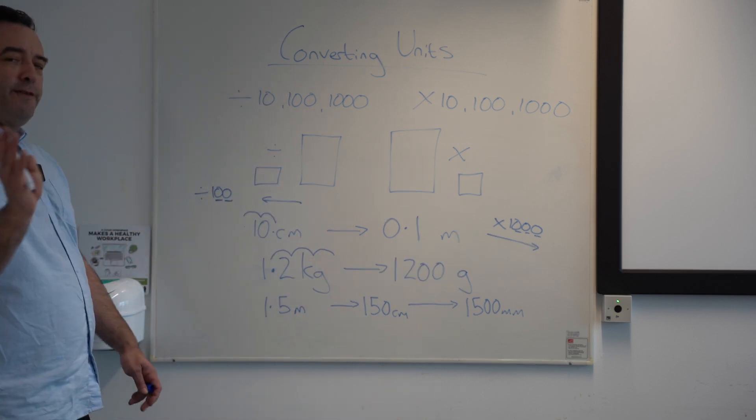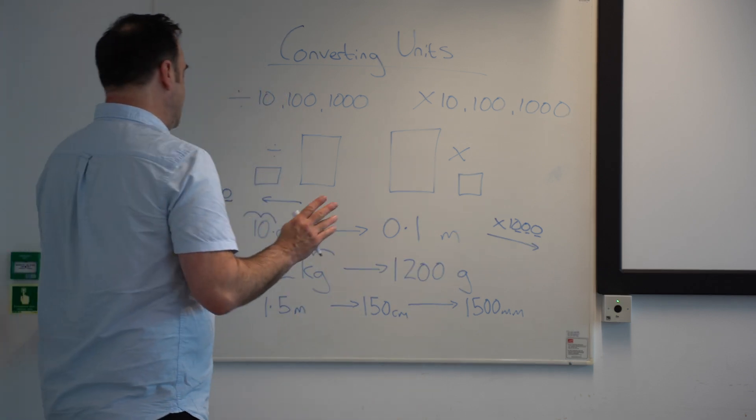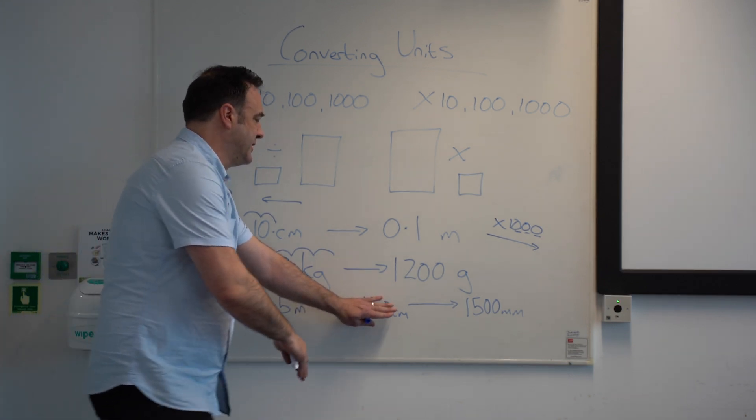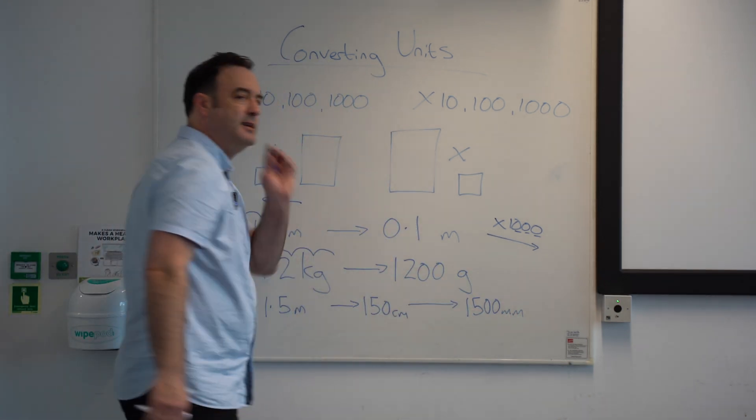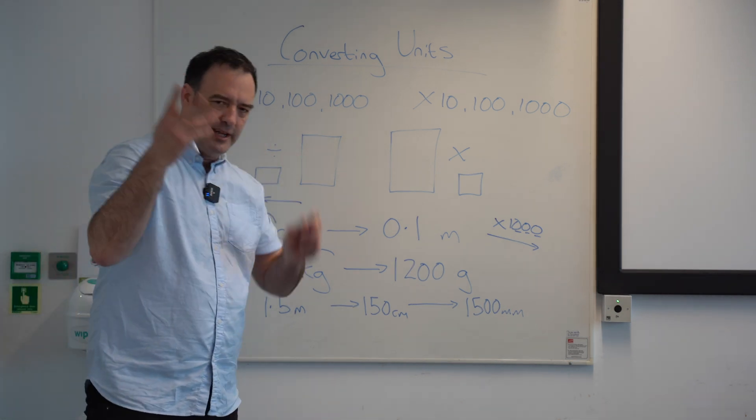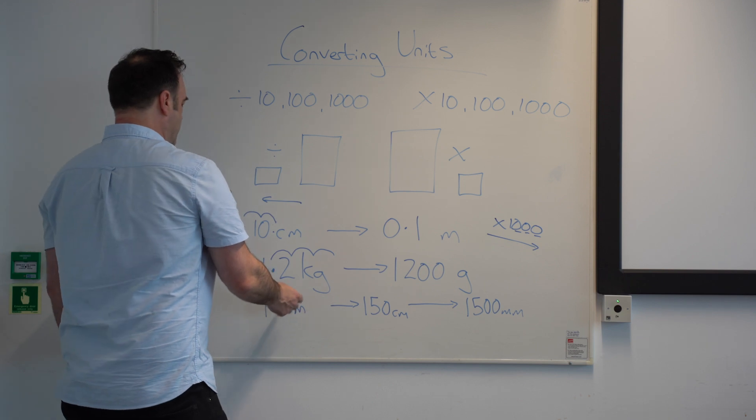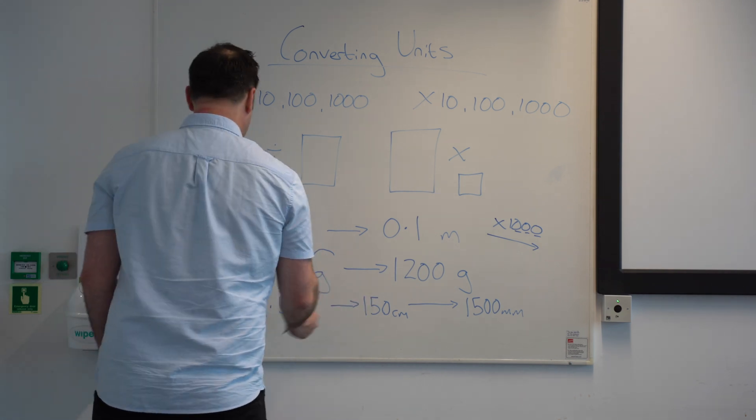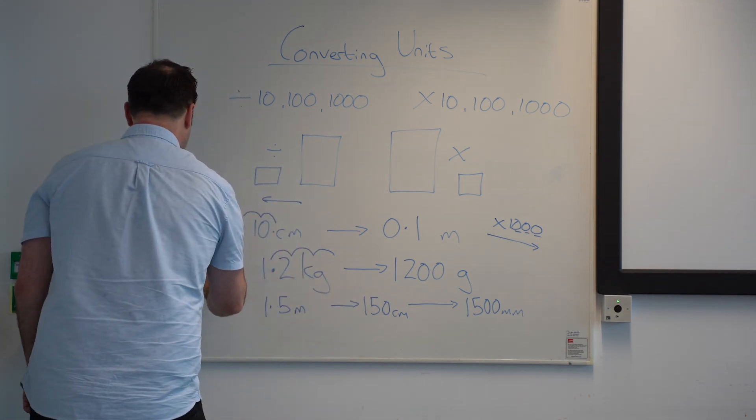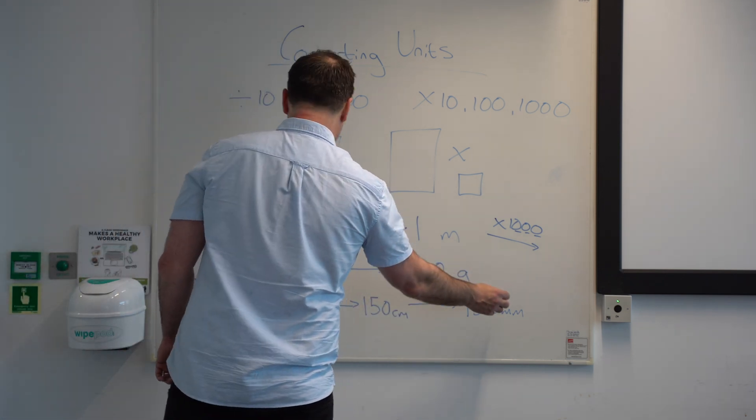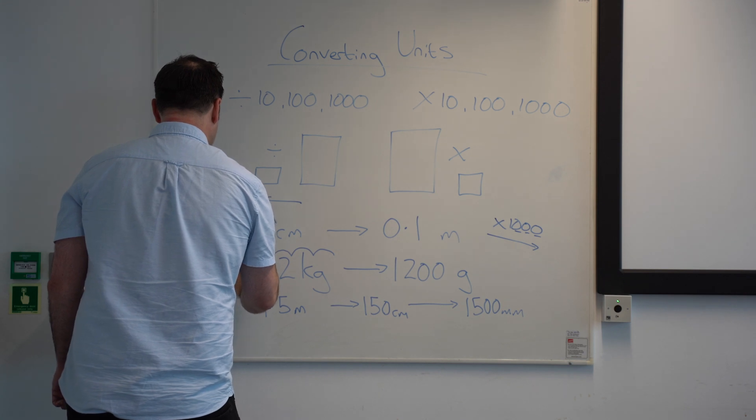Now, what you find in the 11 pluses, what they'll do is say 1.5 metres, and you've got to convert straight to millimetres, just to see if kids are counting on, so I would just break it down. So, I would say 1.5 metres to centimetres, you're times in 100, and then go from centimetres to millimetres, you're times in by 10 again.